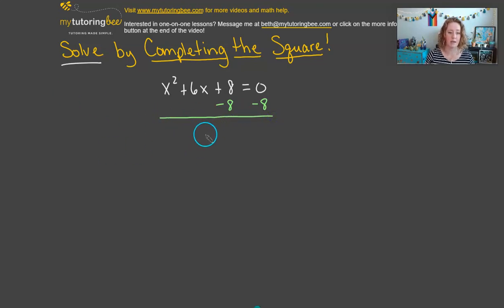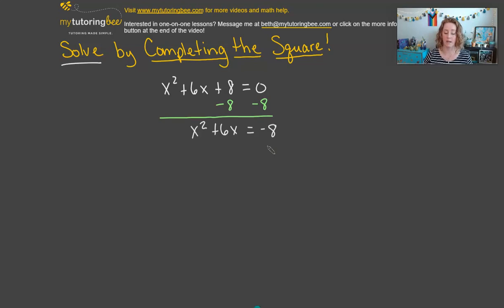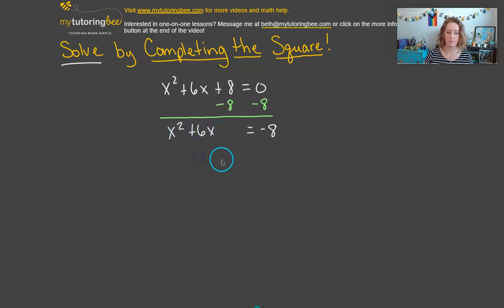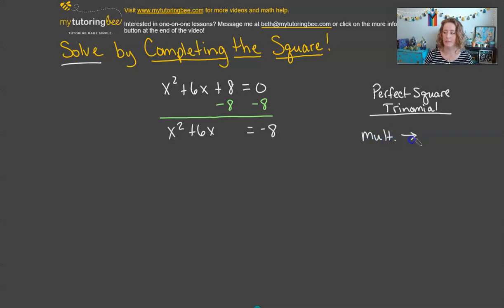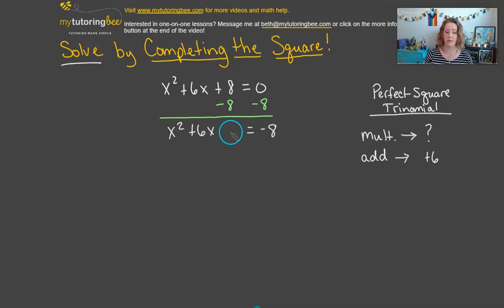Subtracting 8 from both sides gives us x squared plus 6x equals negative 8. I haven't changed the value of the equation — I've simply used the subtraction property. Now I'm going to move those two terms over and leave some space, because I want to put in a third term that will make this a perfect square. What's going to add to give us positive 6 is our starting point — we'll use that 6 to figure out what the third term needs to be.